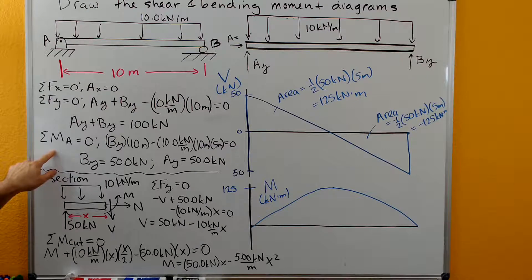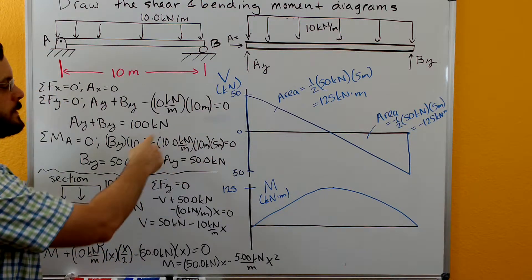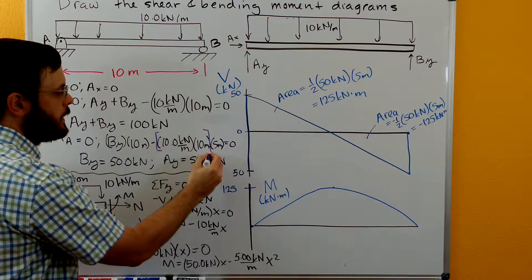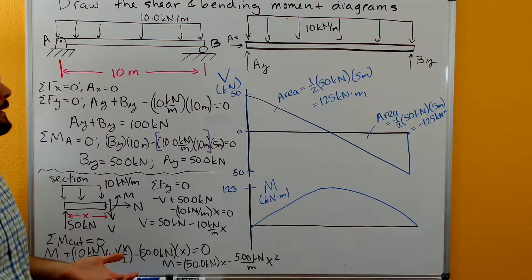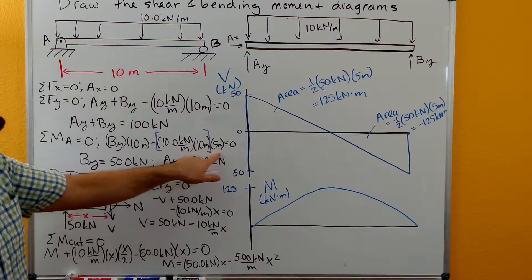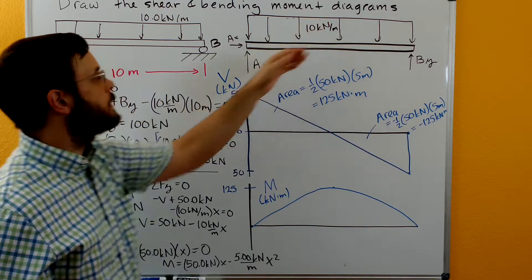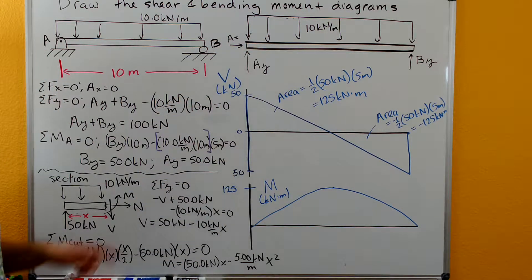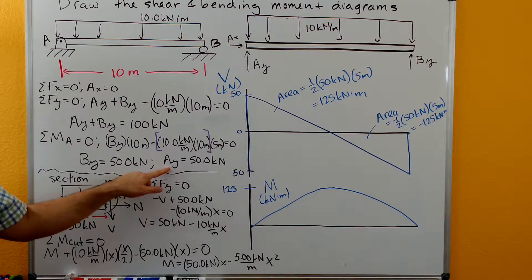Then we do sum of moments around A equals zero. We have positive BY times 10 meters minus the force from the distributed load. That force is base times height — 10 kN per meter times 10 meters — and the five meters is the distance to the centroid of the distributed load. The centroid of a rectangle is right in the middle, so five meters over. It causes a negative moment about A. Solving for this, we get BY equals 50 kN, and plugging back in, AY equals positive 50 kN.